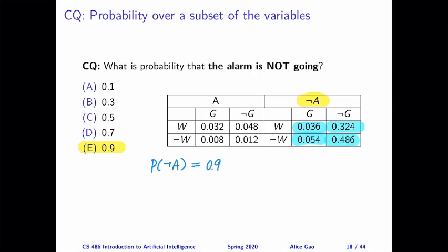So mathematically, this looks as follows. The probability of not A is equal to the probability of not A where we're going to have to enumerate all possibilities for W and G: W and G are both true, W is true and G is false, W is false and G is true.